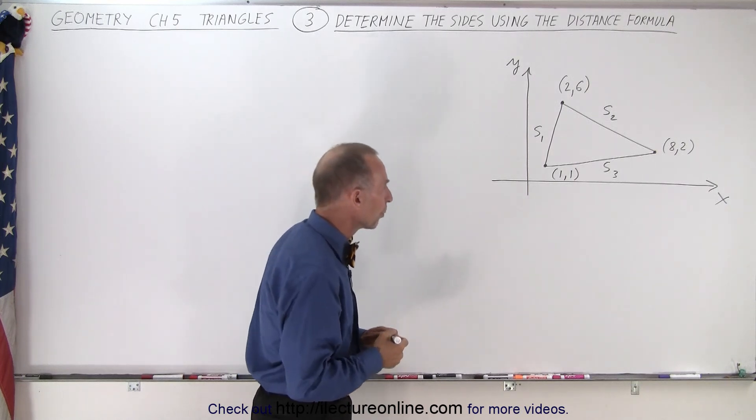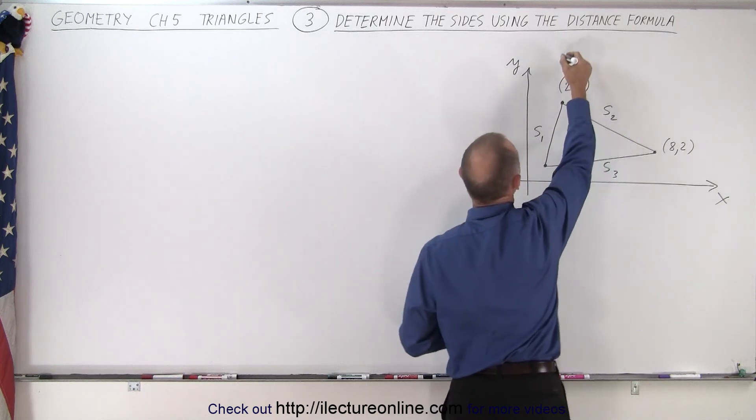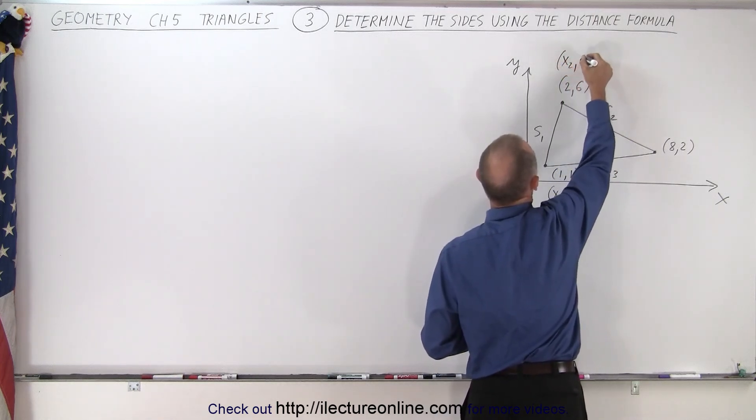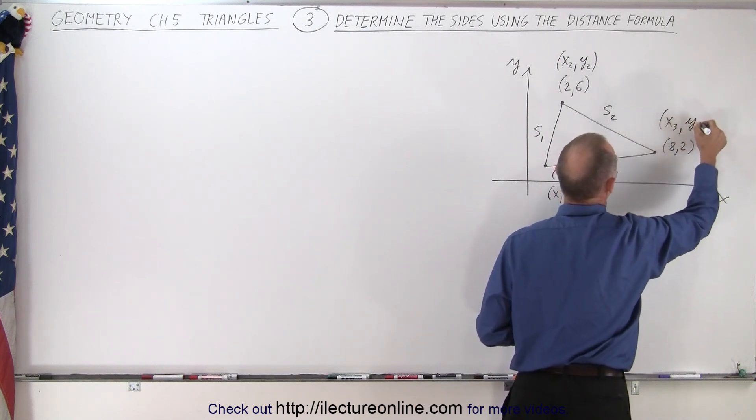It's always a good idea to label your points. So let's call this point 1, and so this is x1 and y1. Let's call this point 2, so this is x2 and y2, and this is point 3, so this is x3 and y3.